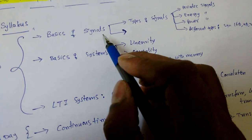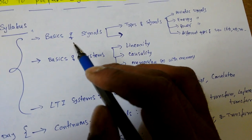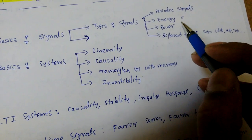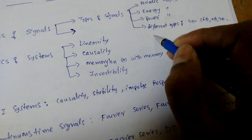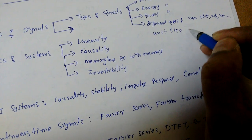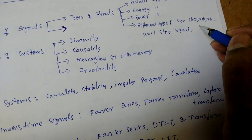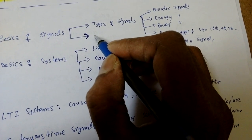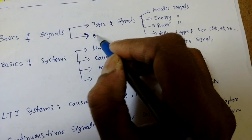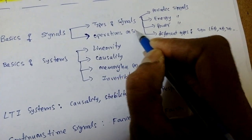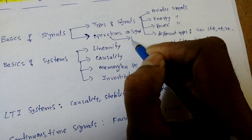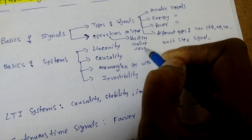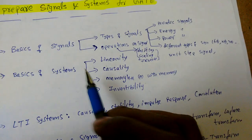The first topic is basics of signals. We need to learn what the types of signals are — periodic signals, energy signals, power signals — as well as different types like the unit step signal, impulse signal, and ramp signal. We also need to learn the different operations on signals like shifting, scaling, inverting, and reversal.